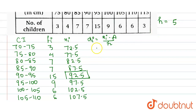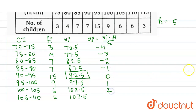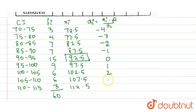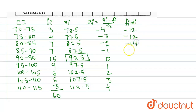Putting in the values and calculating dᵢ: the values are −4, −3, −2, −1, 0, 1, 2, 3, and 4. The next column requires calculating fᵢdᵢ, giving values: −12, −12, −14, −7, 0, 9, 12, 18, and 12. The sum of fᵢdᵢ equals 6.